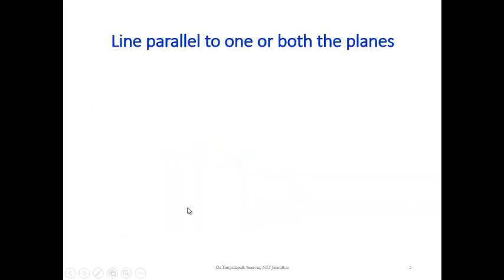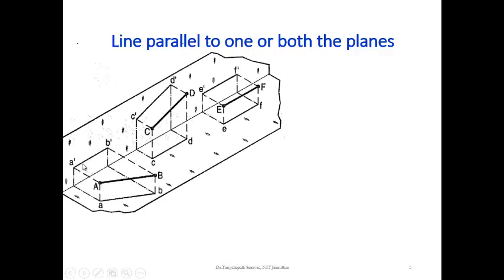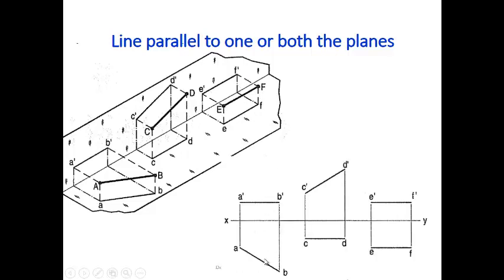The case where the line is parallel to both the horizontal plane and vertical plane: we start with the true length. The true length can be seen in the front view, so the front view is drawn first, then projections are made to draw the top view. Both the front view and top view have the same length because the line is parallel to both the horizontal plane and vertical plane.